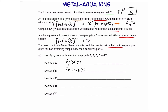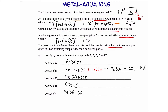The green precipitate (iron carbonate) was reacted with sulfuric acid, giving a solution and a colourless gas. Any carbonate reacted with an acid gives a salt plus carbon dioxide plus water. So the salt produced must be iron sulfate and the colourless gas is carbon dioxide. Therefore, the identity of Y, the green salt, must be FeBr2.